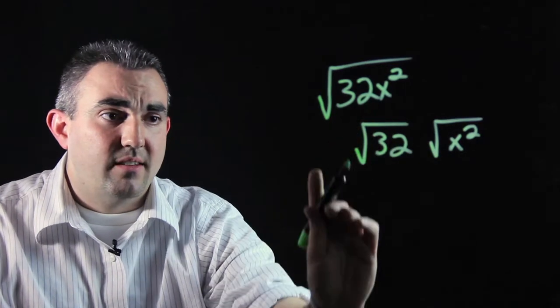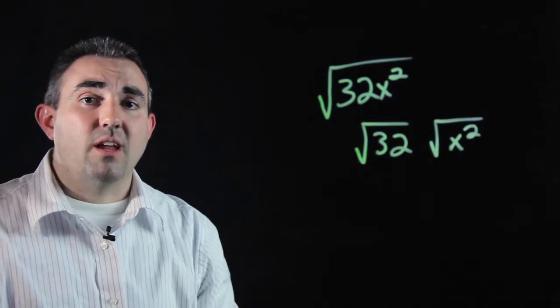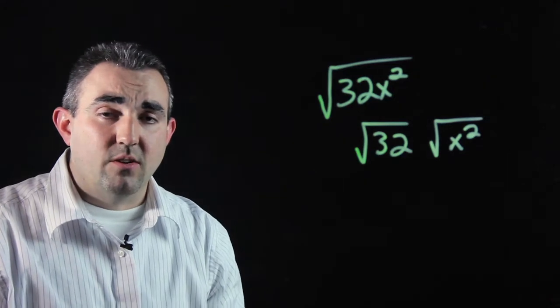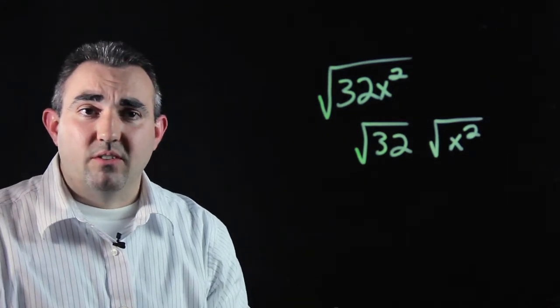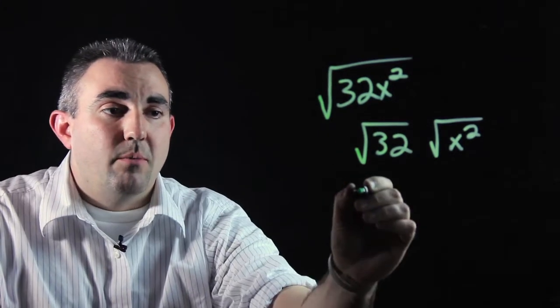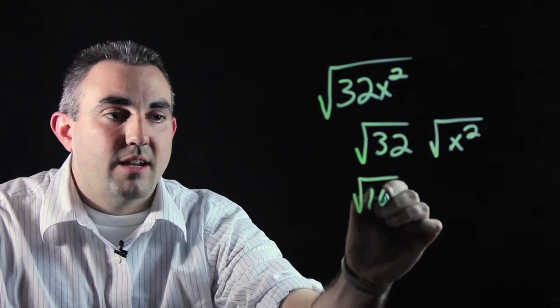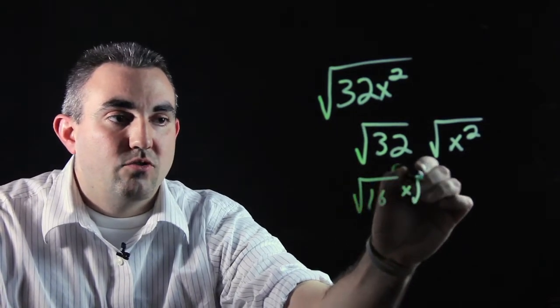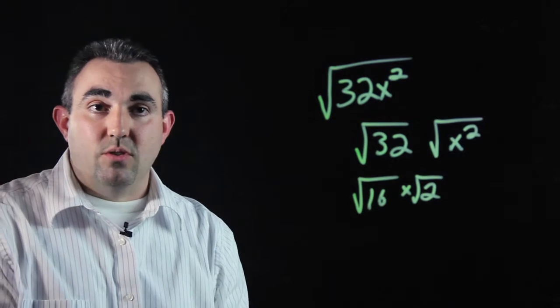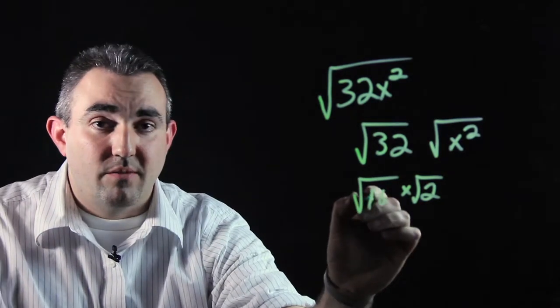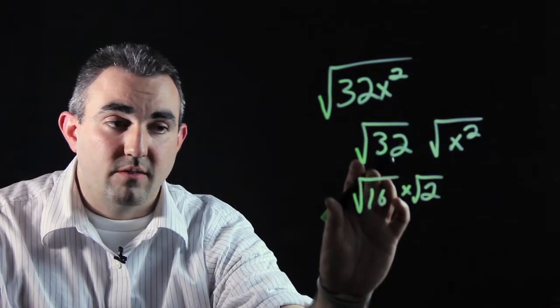32, not as easy to do. So you need to think of some of the factors of 32 that might include a perfect square inside of it. For example, if you multiply 16 times 2, that gives you 32. And 16 is a perfect square because 4 times 4 gives you 16.